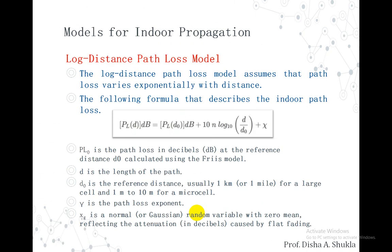The second model is the log distance path loss model, which assumes that path loss varies exponentially with distance. The formula is PL(d) = PL₀ + 10·γ·log₁₀(D/D₀) + X_G, where PL₀ is the path loss in dB at reference distance D₀ calculated using Friis's model, D₀ is usually 1 km for a large cell and 1 m to 10 m for a microcell, γ is the path loss exponent, and X_G is a zero-mean Gaussian random variable reflecting attenuation caused by flat fading.